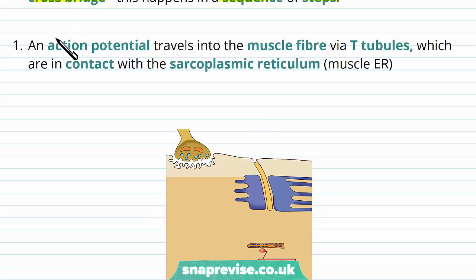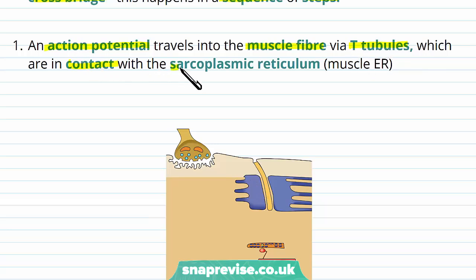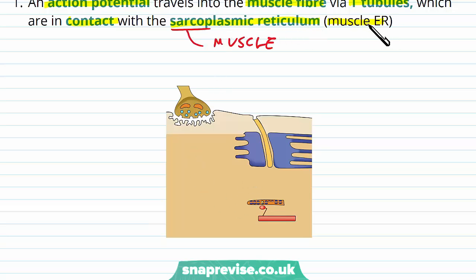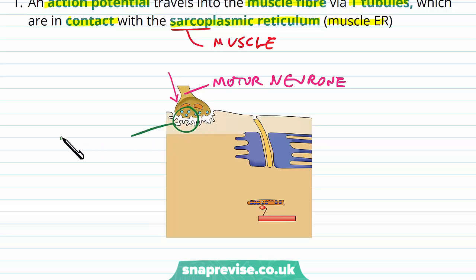First of all, when we want a muscle to contract, we obviously send an impulse along a neuron towards the muscle. This action potential travels to the muscle fibre, or the muscle cell, and it does this via T-tubules. These are basically tubules which go in contact with the muscle cell, and they invaginate deep down into the cell. Eventually these T-tubules come into contact with the sarcoplasmic reticulum, which is the endoplasmic reticulum of the muscle cell. So the motor neuron sends an action potential down to the neuromuscular junction.